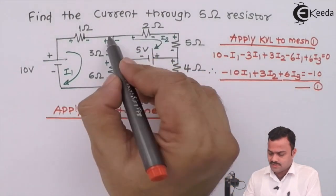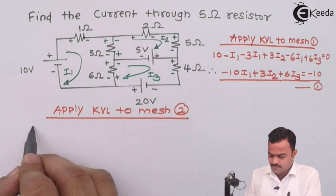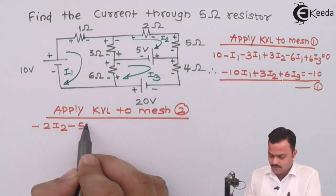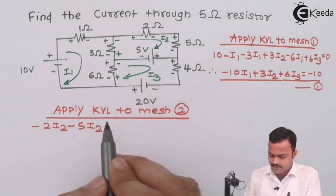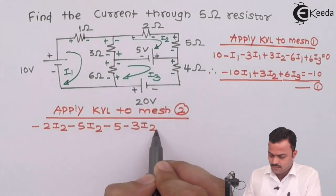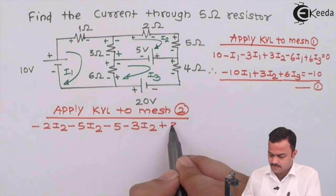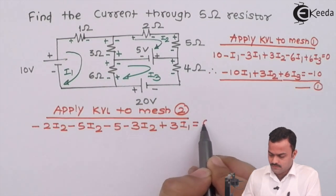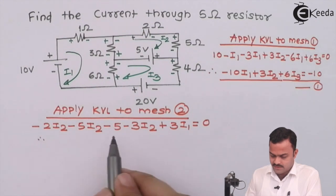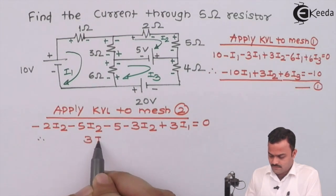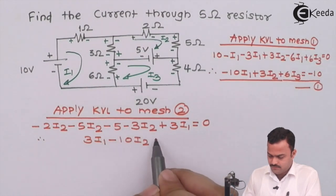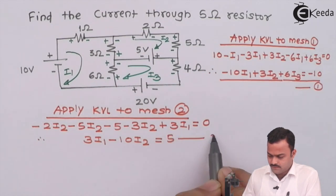Let's apply KVL to mesh two. Starting from the designated point: minus 2·i2, minus 5·i2, minus 3·i2, and the shared 3 ohm resistor gives plus 3·i1, equal to zero. After simplification, the second equation is: 3·i1 minus 10·i2 equals 5, as equation number two.